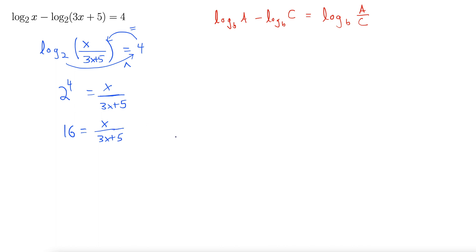We need to isolate the x at this point. Let's multiply up to get that out of the denominator. This gives us 16 times 3x plus 5 equals x.